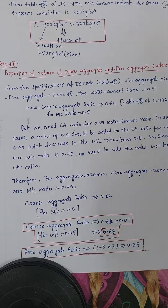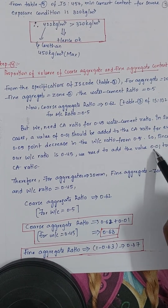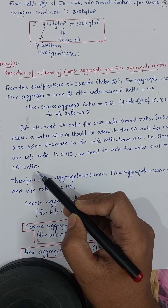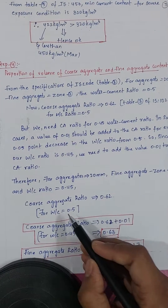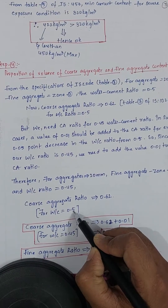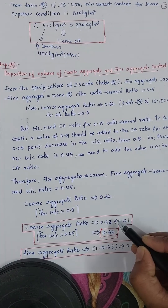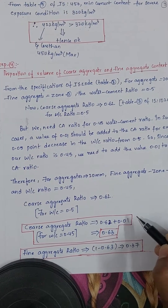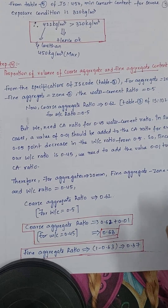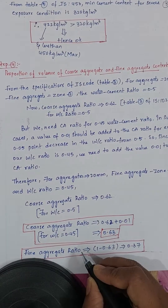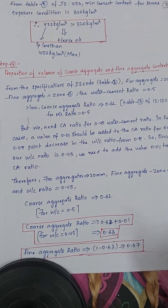Since our water cement ratio is 0.45 (less than 0.5), we add 0.01 to the coarse aggregate ratio. So coarse aggregate ratio = 0.62 + 0.01 = 0.63. Therefore fine aggregate ratio = 1 − 0.63 = 0.37.